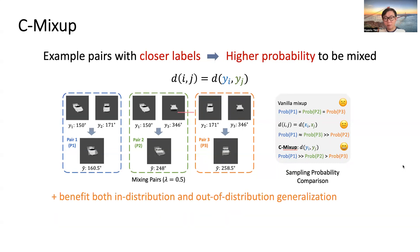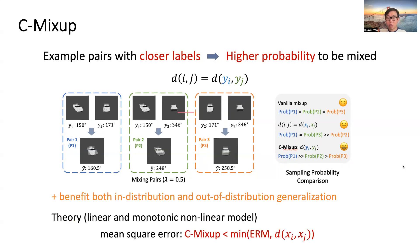In terms of the first benefit, under linear and monotonic nonlinear models, our theory demonstrates that C-Mixup achieves less mean square error compared to ERM and using feature distance in both in-distribution generalization and out-of-distribution generalization. Please refer to our paper for detailed theoretical analysis.